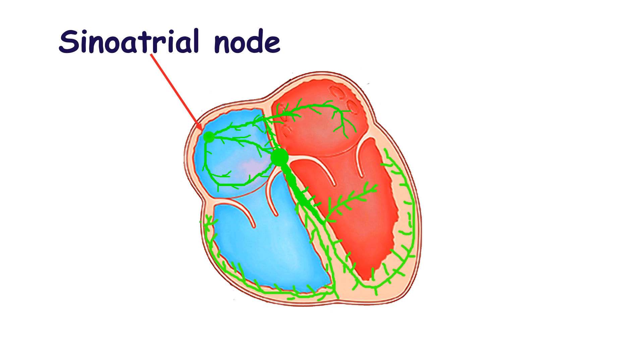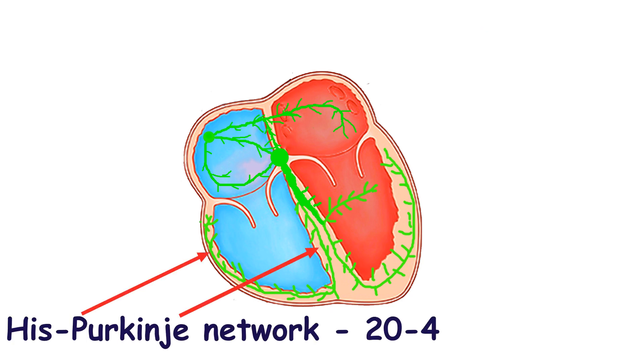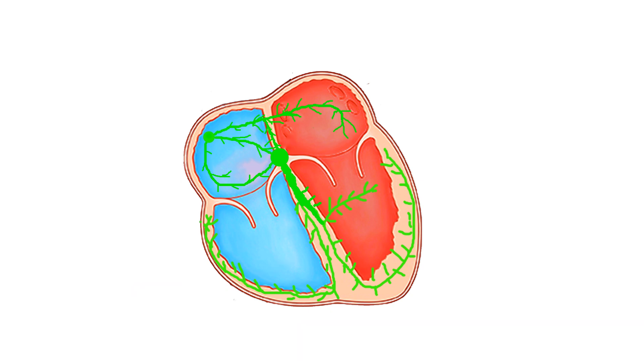Normally, the sinoatrial node can produce 60 to 100 impulses per minute. The atrioventricular node may create 40 to 60 impulses per minute, and only 20 to 40 depolarizations per minute may be produced by His-Purkinje network of the ventricles. This is the intrinsic rate of spontaneous depolarization in these structures.